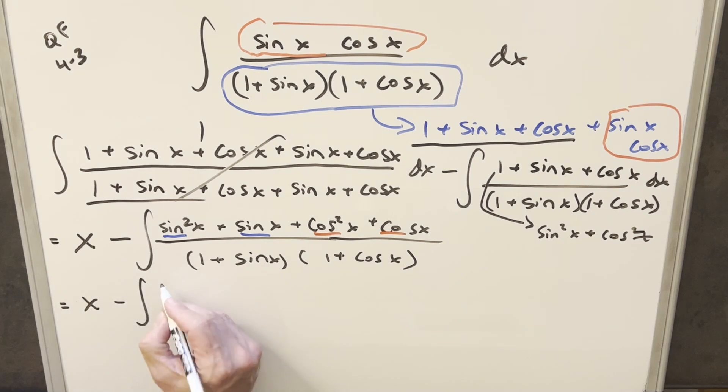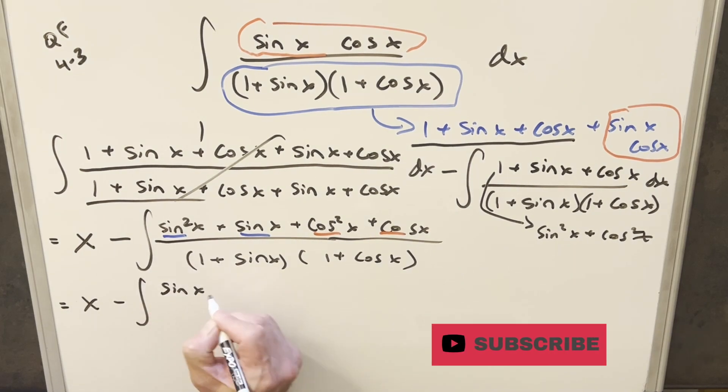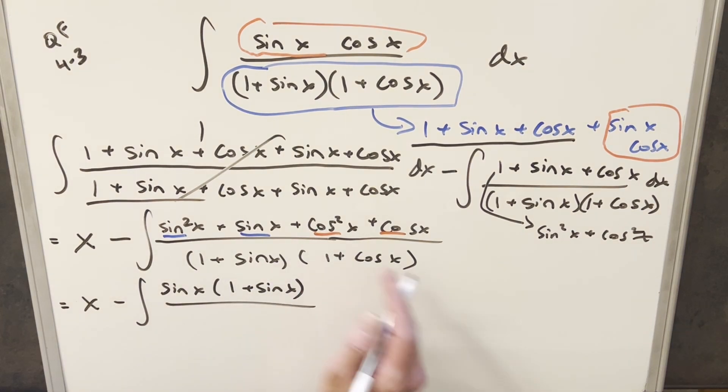So for this first one, factoring it, we'll factor the sine. Well, sine x, this is going to become... I'm going to change the order just to make it clear that we're going to get cancellation. So I'm going to write it as 1 plus sine x all over this.